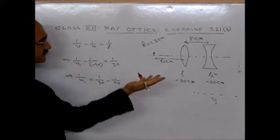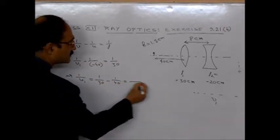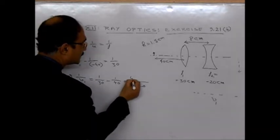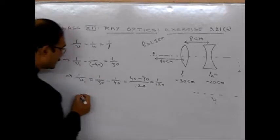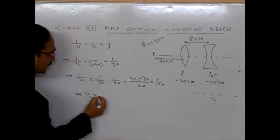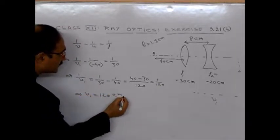If you solve that, 1 by V1 will be 1 by 30 plus 1 by 40. This will be 120, 40 minus 30, which is 1 by 120, which implies V1 will be equal to 120 cm.